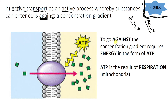And if you want to go against the concentration gradient, you need energy. We get our energy from aerobic respiration inside cells, from the mitochondria, and it is in the form of something called ATP. It's a very long word — adenosine triphosphate — but you don't need to know what it stands for. You just need to know that ATP is a molecule that provides the energy to this whole process.